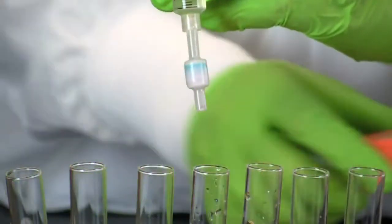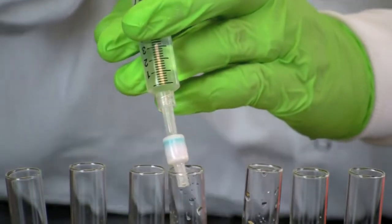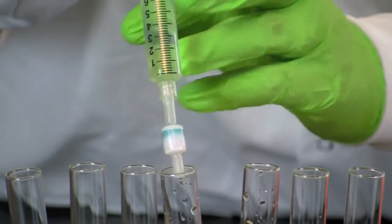Once all of the pigment has come off the column, push a final 10 ml of 25% 2-propanol through the cartridge, and collect the flow through in a final test tube.